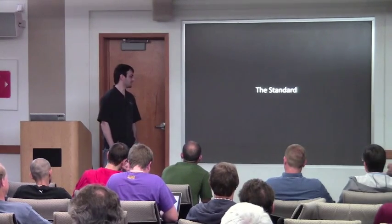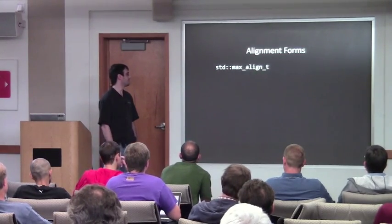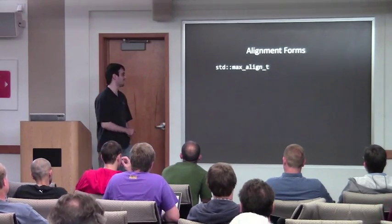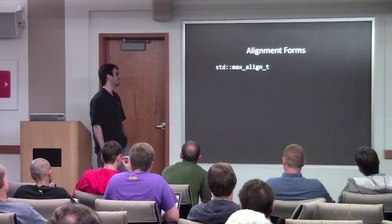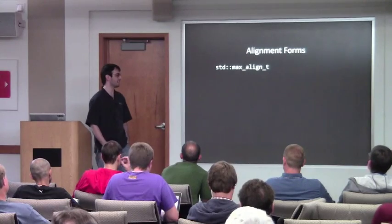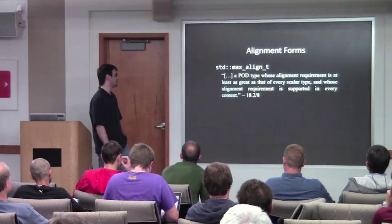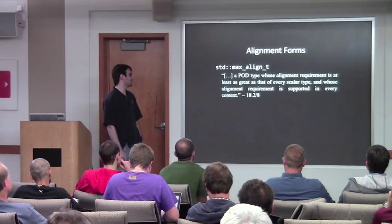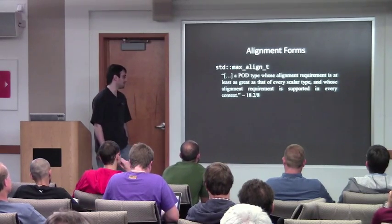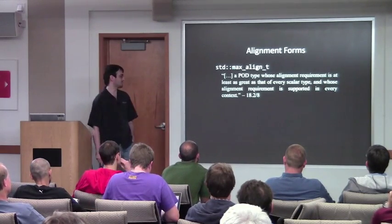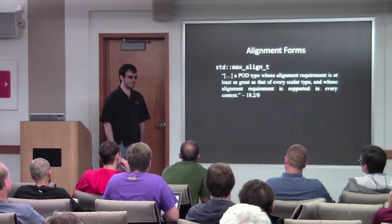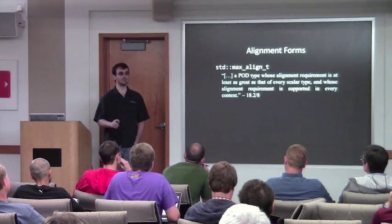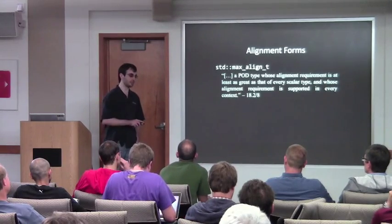So first, the standard. The most important, or most fundamental thing, is `std::max_align_t`. Everything's defined in terms of this. It's a POD type whose alignment requirement is at least as great as that of every other scalar type, and whose alignment requirement is supported in every context. So the alignment of this thing is the maximum that is required to be supported everywhere.